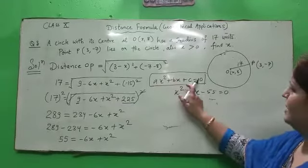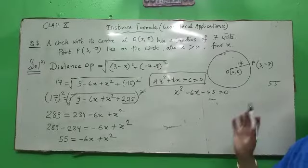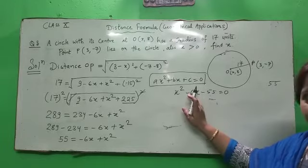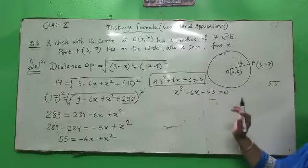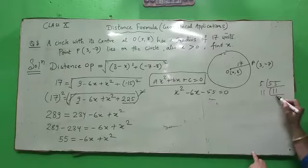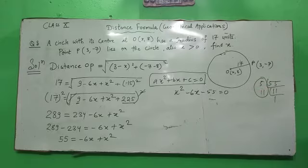So we can write X square minus 6X minus 55 is equal to 0. Now 55 and there is nothing in front of X square, so A's value is 1, C's value is 55. General form you should remember, let me remind you, AX square plus BX plus C equal to 0, general form of quadratic equation. So A into C, 1 into 55, we'll get 55.